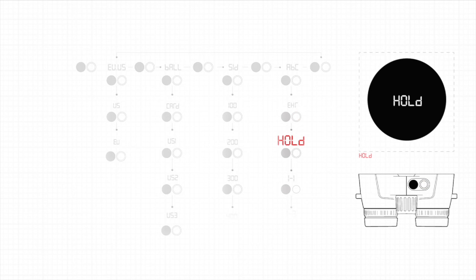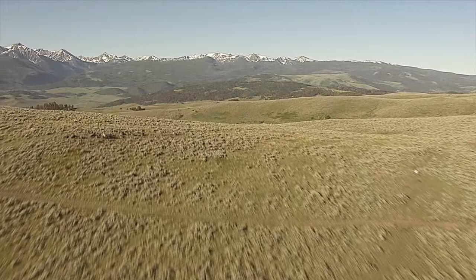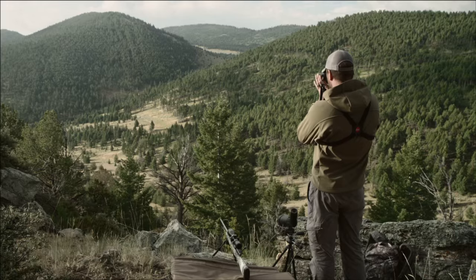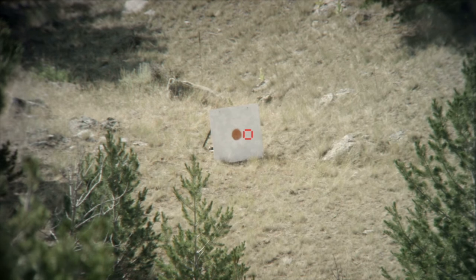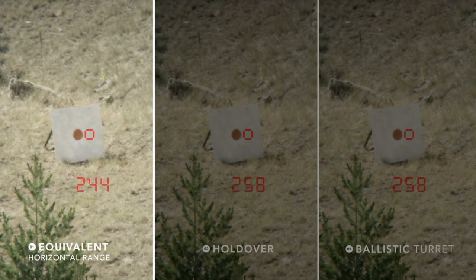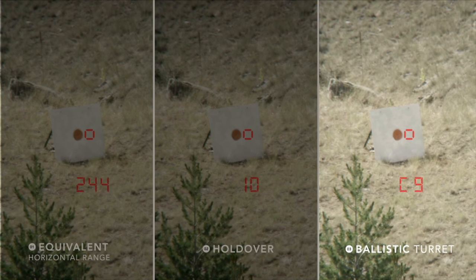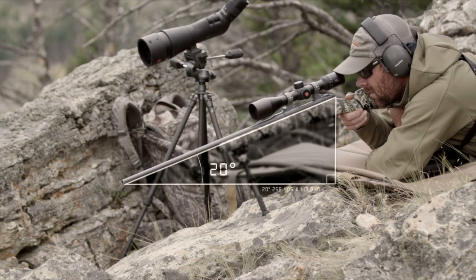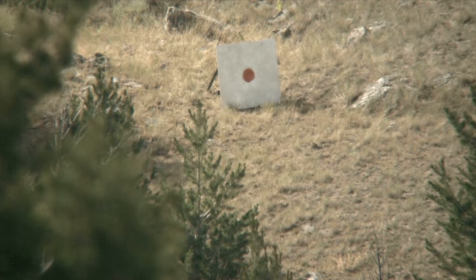Your Geovid is now set up. To illustrate exactly how each output works, let's head into the mountains. To range your target, all you need to do is press the measurement button once. The Geovid will always give you your linear distance first, followed by whichever output value you've selected in the menu. All of these outputs take into consideration the angle at which you're shooting, barometric pressure, temperature, and your specific ballistic drop curve.